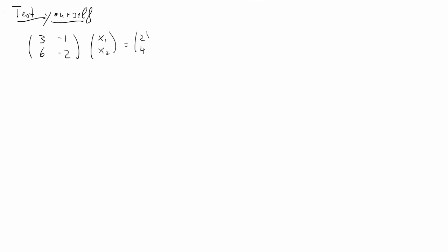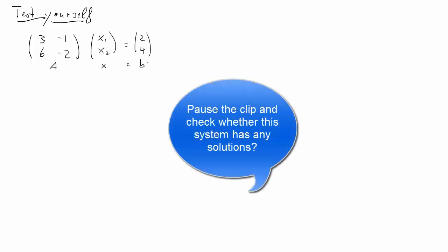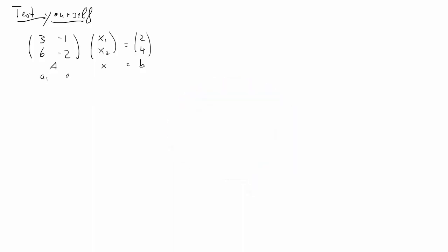Here's a new problem — a test for you. Here's a system Ax = B. Pause the clip and check whether this system has any solutions. Let's look at this: first the rank of A. We have two columns — call them A1 (yellow) and A2 (green). A1 is actually the same as negative 3 times A2, so the two columns are not independent information, and the rank of A is therefore reduced to 1.